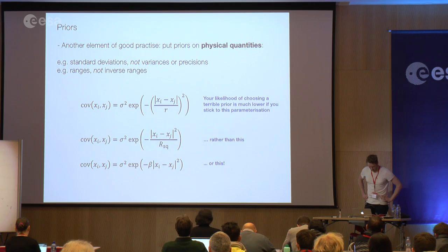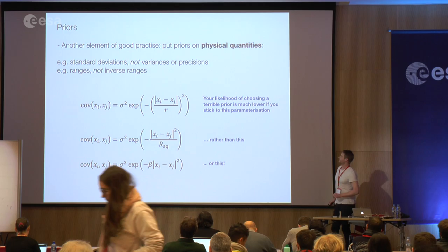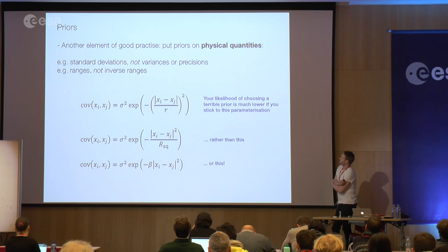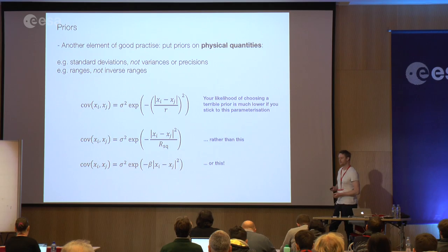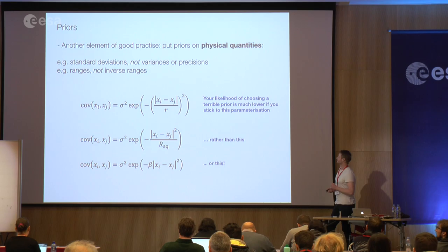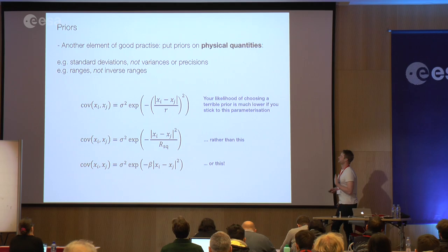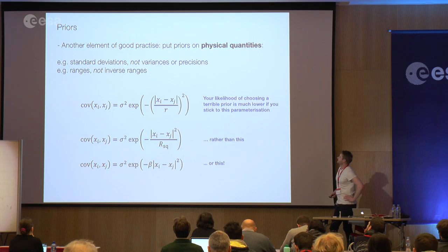Before the break, I was talking about priors, and I have a couple more things to say before moving on to the next topic, which will be shrinkage. To review, we looked at three different ways of thinking about priors: priors as encoding knowledge, priors as providing regularization against unphysical or undesirable posteriors, and priors as a representation of your data generating process to complete the generative model.